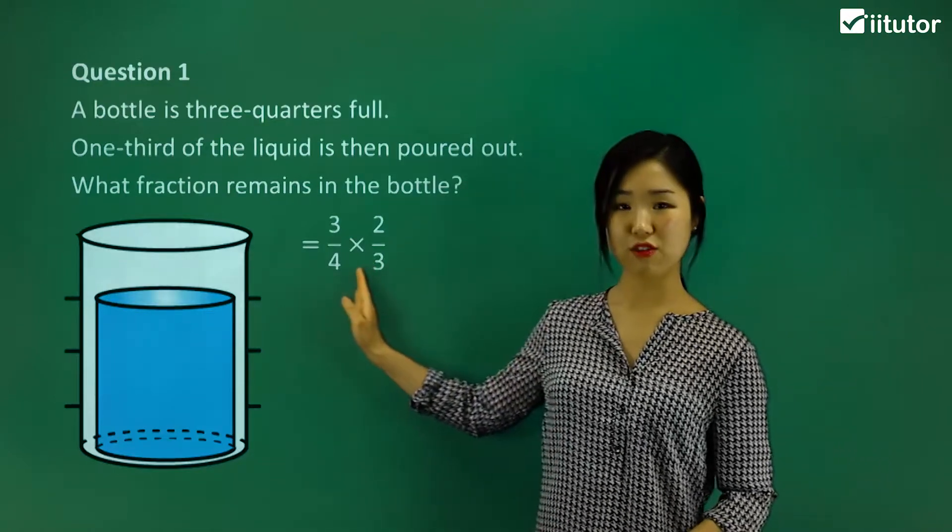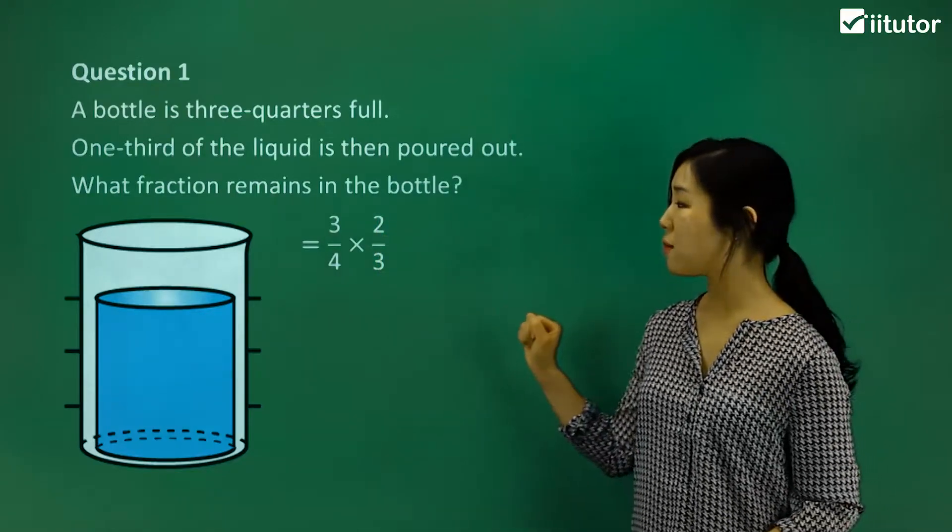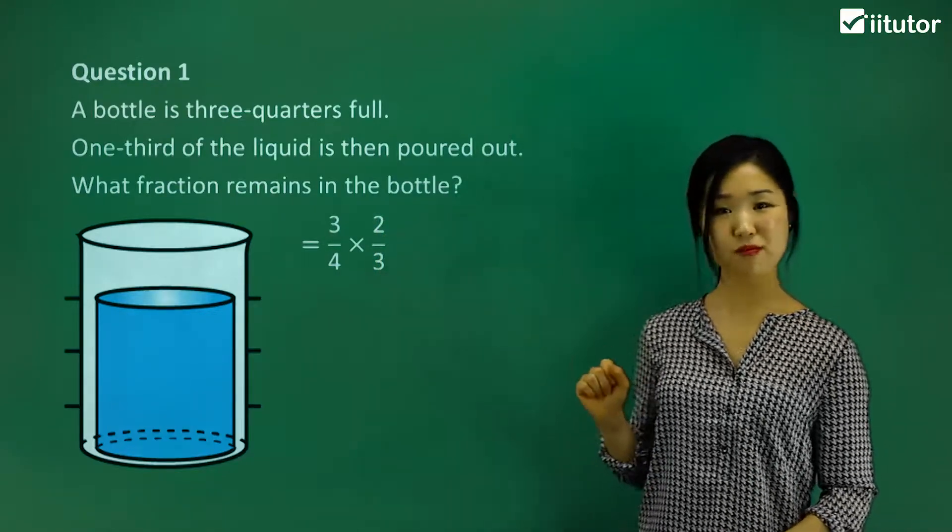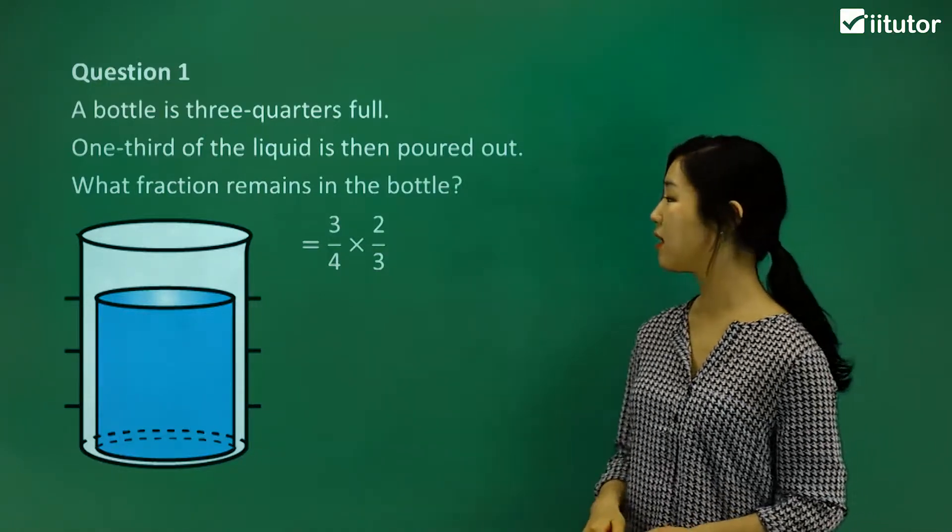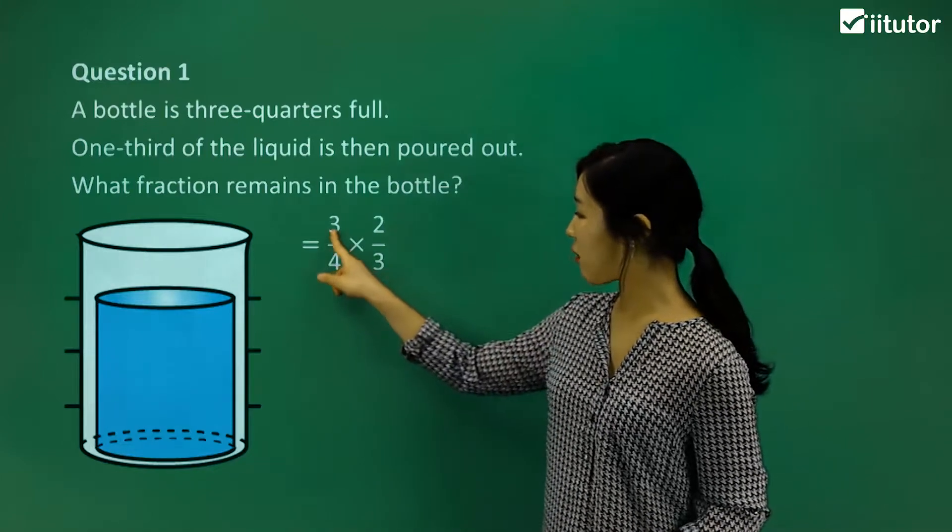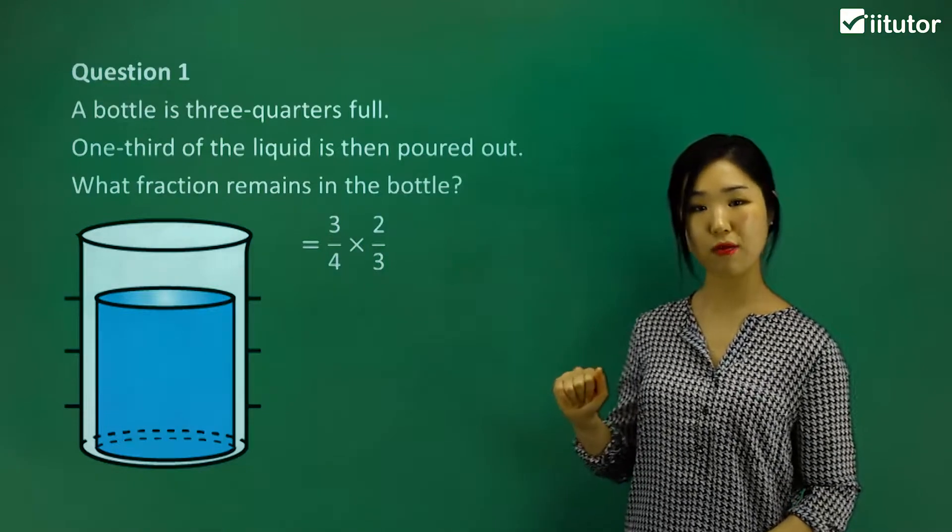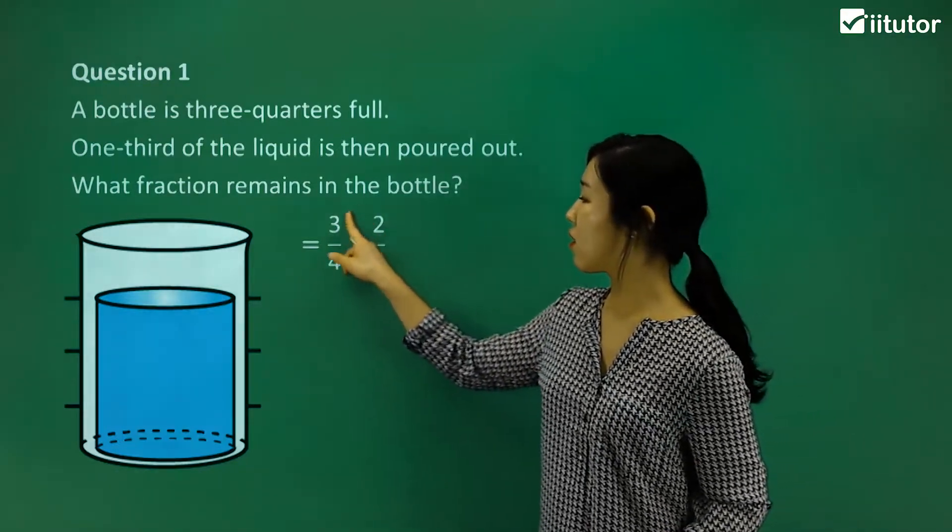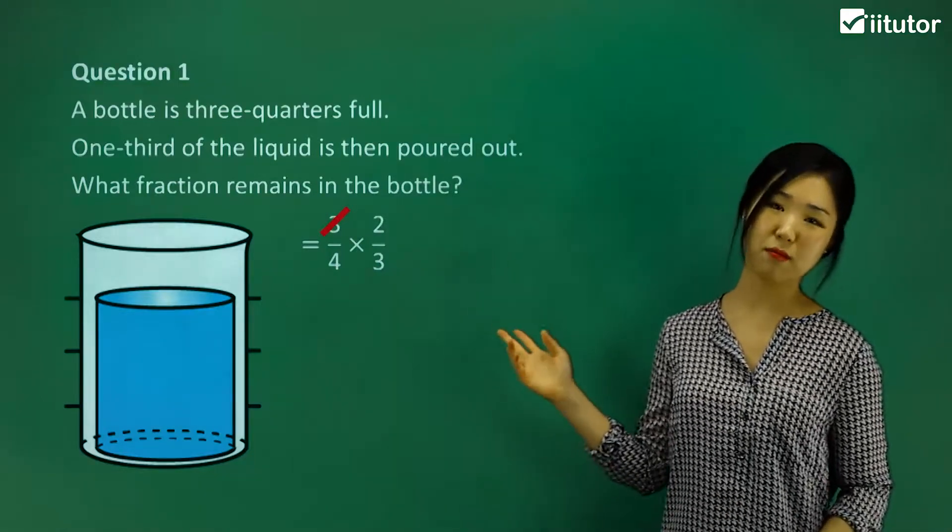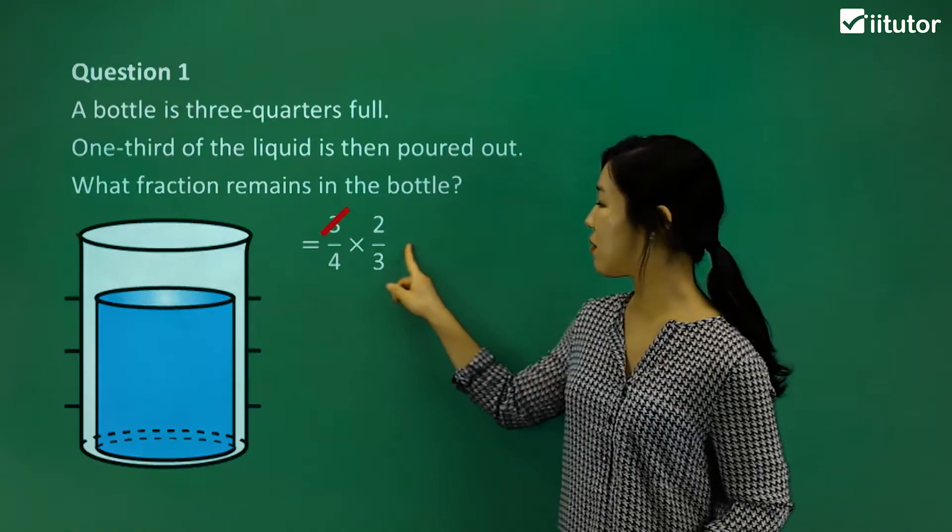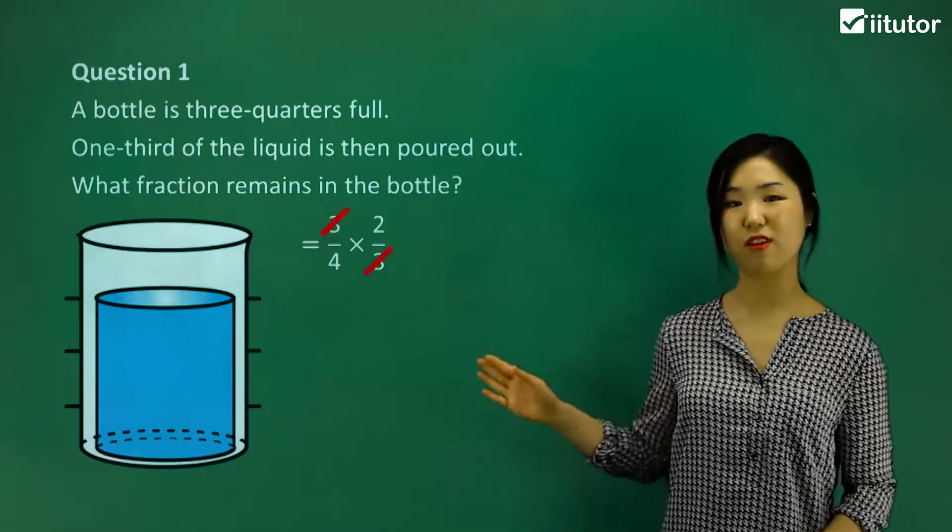When we multiply fractions, remember we multiply the numerators together and the denominators together. But if we can see there's some common factors going on top and bottom, we can cancel them out and simplify. You can see on the top we have three, and on the bottom we also have a three. So we can divide both top and bottom by three. Let's cross out the three, and then it just becomes one. Three divided by three is just one, so we don't have to write anything.